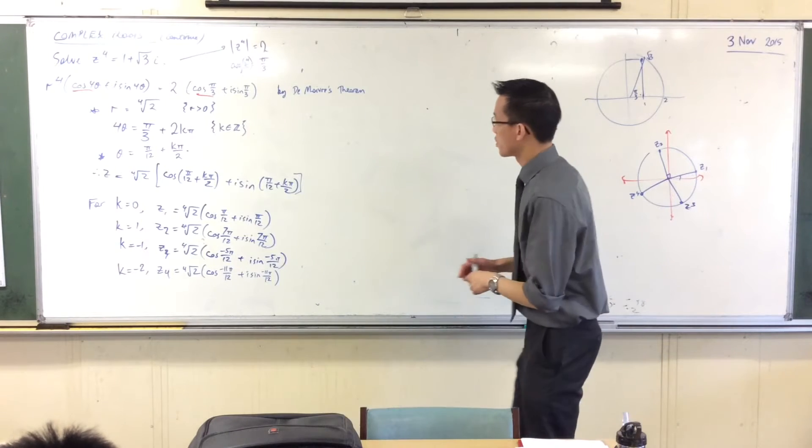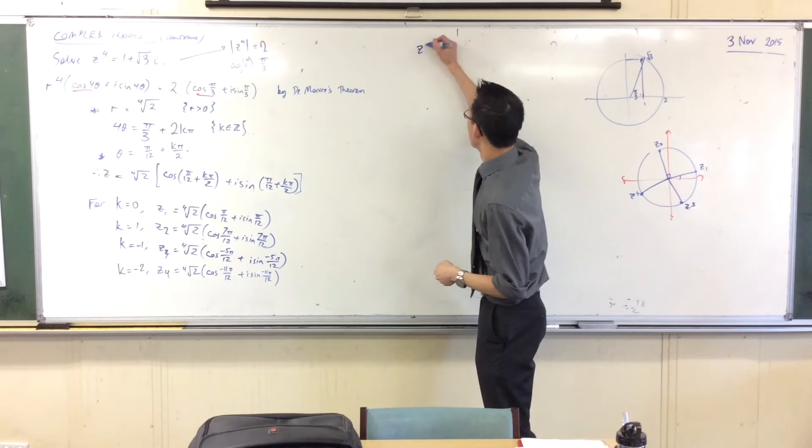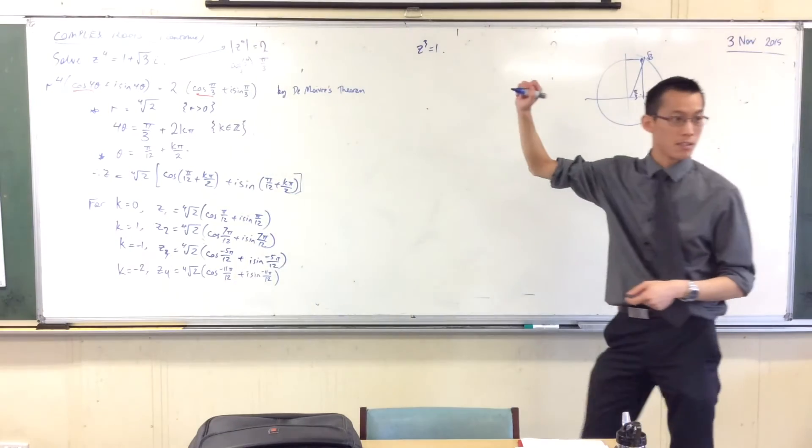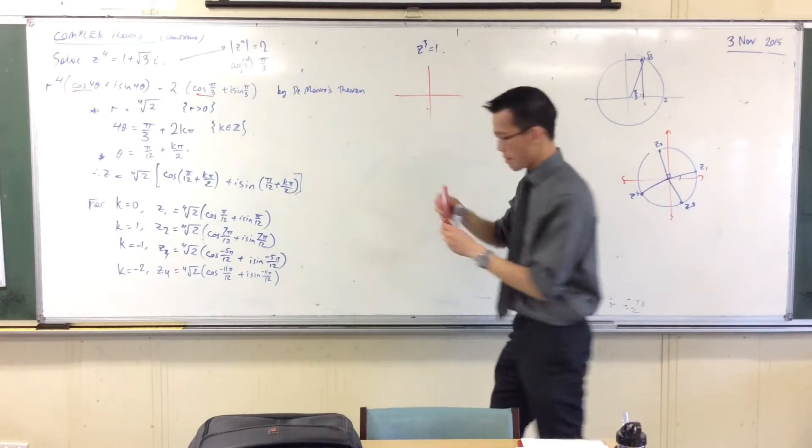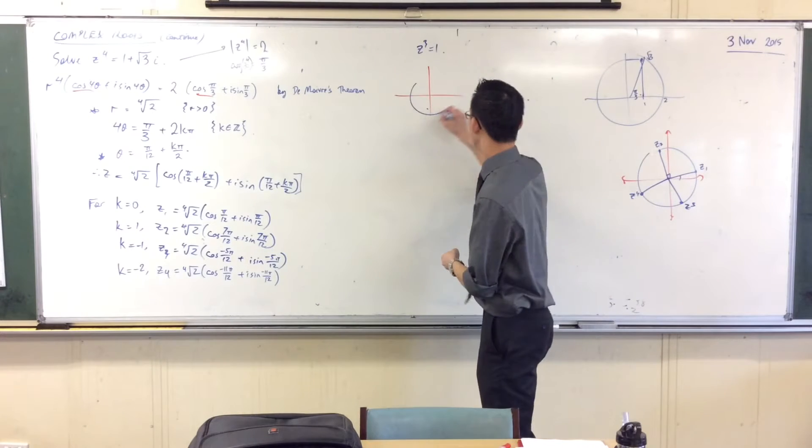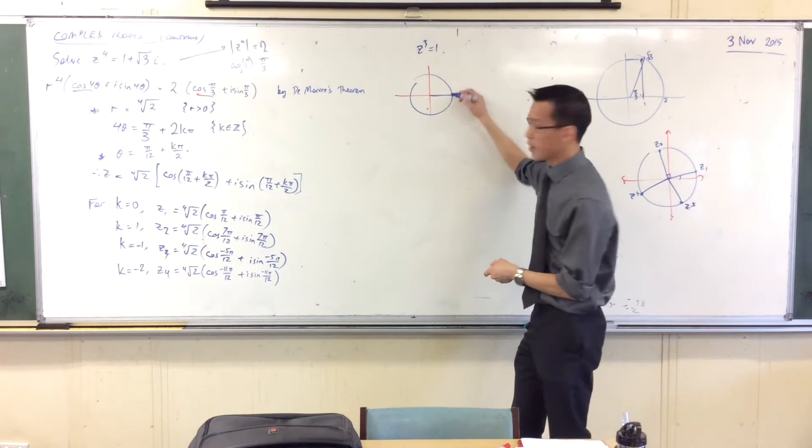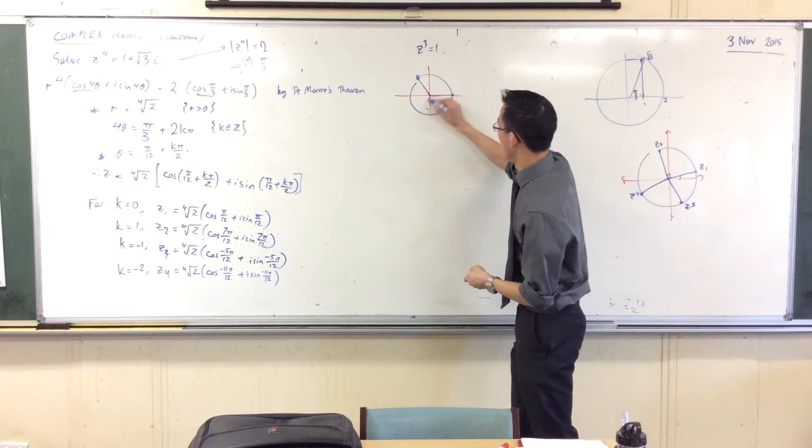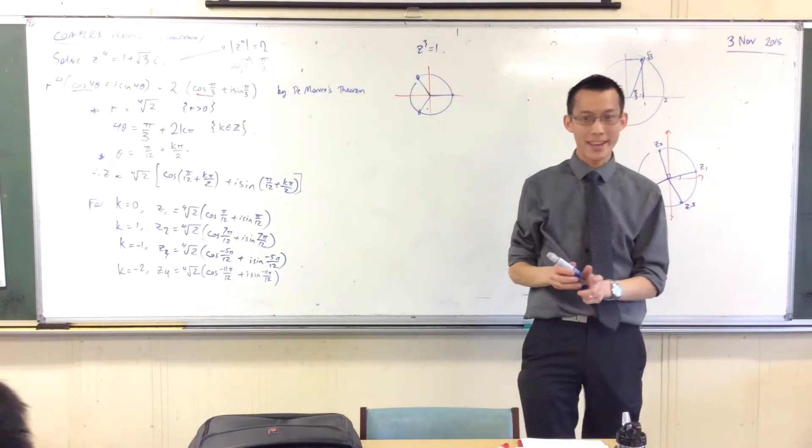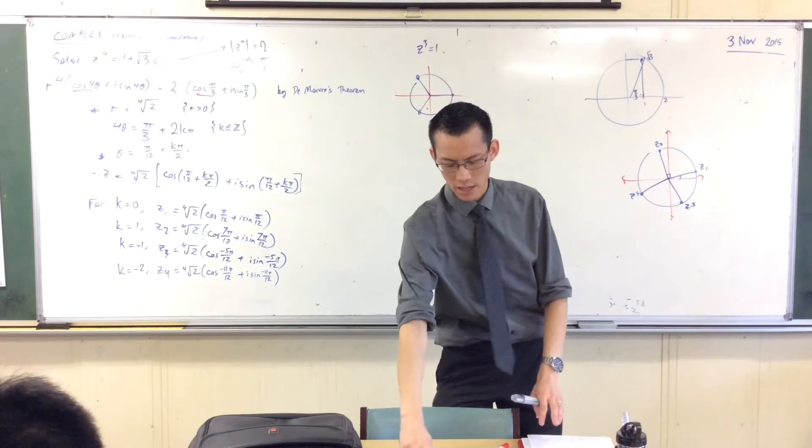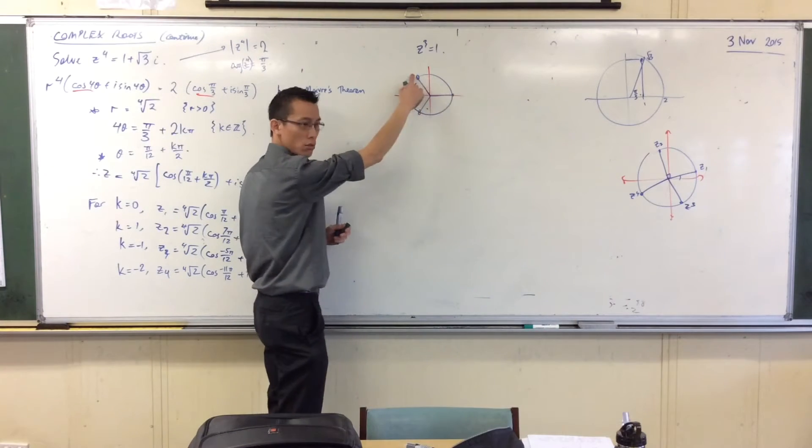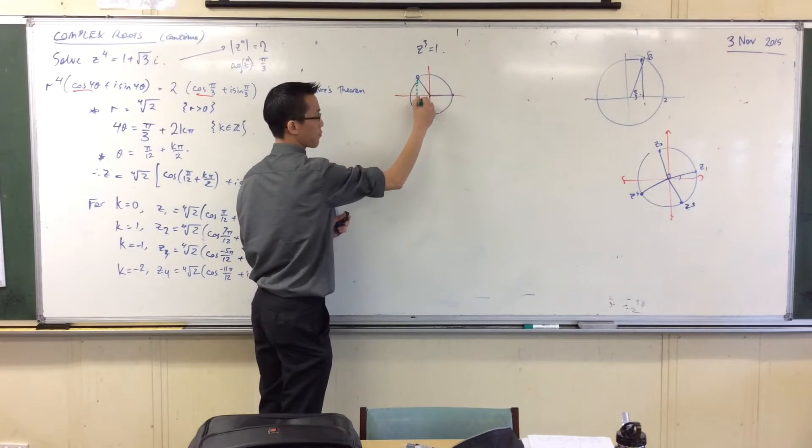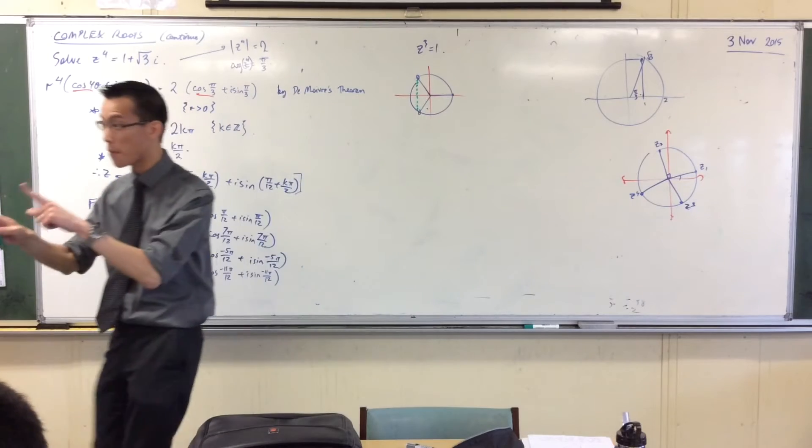Do you remember when I asked you for the solutions to, I think we did the cube roots of unity. Remember the cube roots of unity? And just really quickly, I think from memory we got something like this. One solution there, 2π/3, negative 2π/3, like so. Do you remember we said that's kind of odd. We noticed that z2 and z3 were conjugates of each other. Do you remember that?